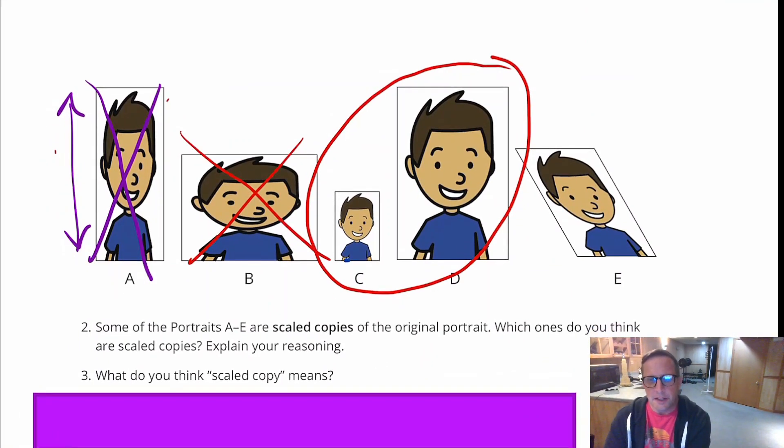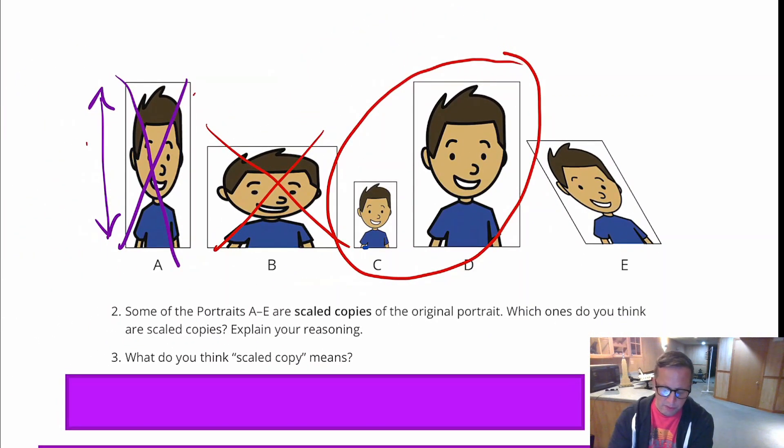And then E, you can count out E because that one's like an oblique shape. You can see right here, the angles changed, right? We no longer have right angles. In the picture, every angle is a right angle because it's rectangular. And then all of a sudden in the scale copy of it, it's not the right angles. You got these acute and obtuse angles in there, which throw it off.